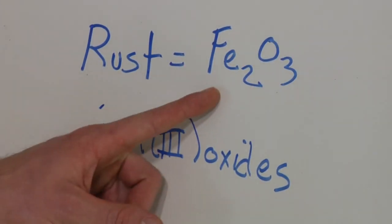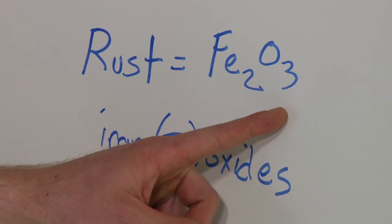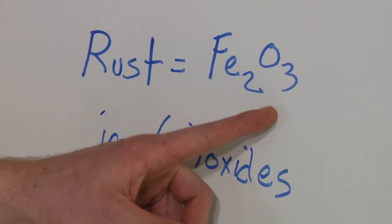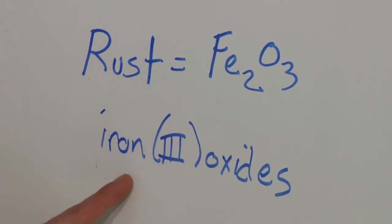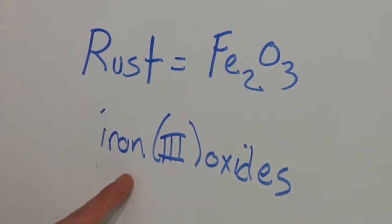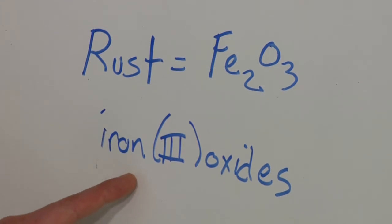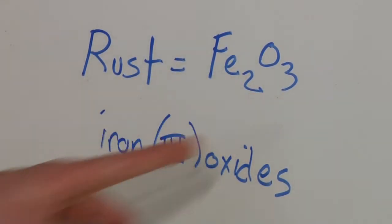There are two irons and three oxygens for every rust particle. They're called iron three oxides. That's simply because iron can have two different forms depending on the number of electrons it holds. So rust is iron two O three — written as Fe₂O₃.